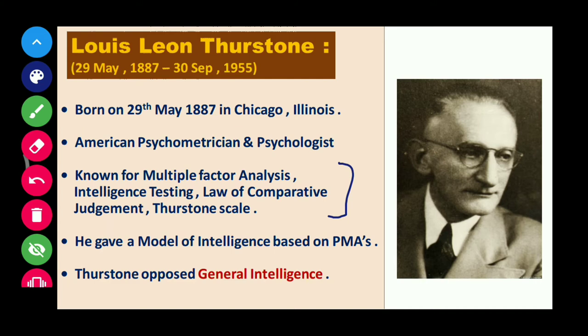He gave a model of intelligence based on PMA — Primary Mental Abilities. Thurstone opposed general intelligence. As we discussed in Spearman's theory with G factor and S factor, Thurstone disagreed with that. He said there is no such thing as general ability or specific ability; instead, intelligence depends on a large group of abilities, which he called a cluster of abilities.